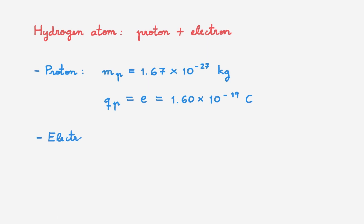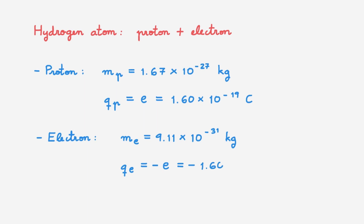Let's now consider the electron. In SI units it has mass M_E of 9.11 times 10 to the minus 31 kilograms. The electron has an electric charge equal to Q_E, which is equal to the negative elementary charge. In SI units it is equal to minus 1.6 times 10 to the minus 19 coulombs.